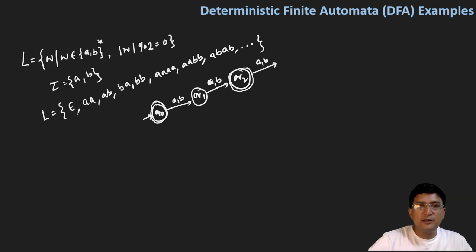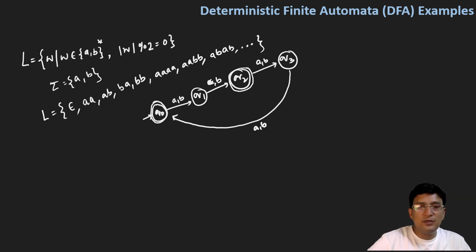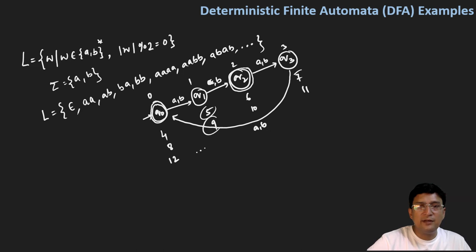This means the three-length string should get rejected — let's say we reach q3. If we have a four-length string, it should get accepted, so with A and B it reaches back to q0, which is the final state. So even-length strings (zero, two, four, six...) are accepted at q0 or q2, while odd-length strings (one, three, five, seven...) land at q1 or q3 and are rejected.